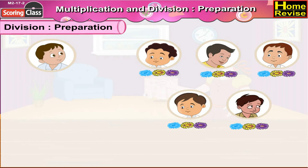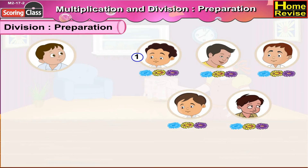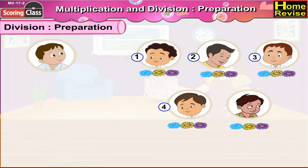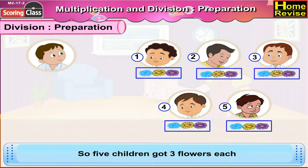Let us count the total number of children who got three flowers each. They are one, two, three, four, five. So, five children got three flowers each.